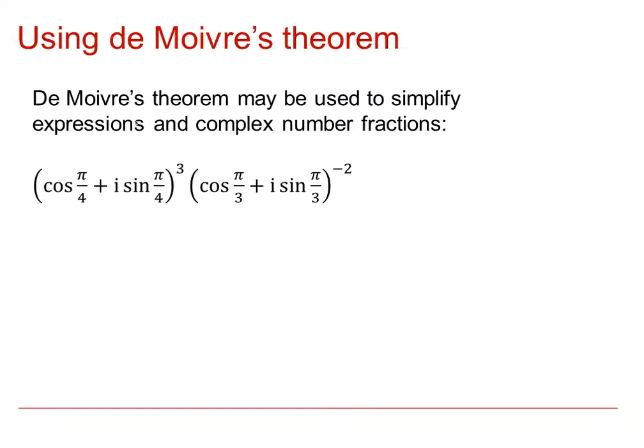So in this example, we're going to use the theorem again to simplify an expression involving complex numbers. It's been written as a product, so we're multiplying two complex numbers together, both of which have powers. So we've got a complex number to the power of 3, a complex number to the power of minus 2. They're both in the correct modulus argument form, ready for de Moivre's theorem.